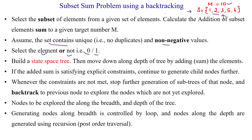This can be solved using the backtracking approach by building the state space tree. When you are selecting any element, you move down along the path of the tree by adding the value of that subset of elements. If the added sum of the subset satisfies the explicit constraints, then you can generate the child nodes.